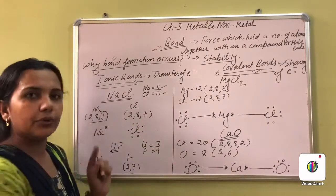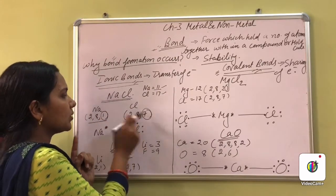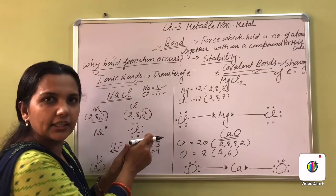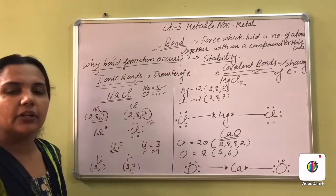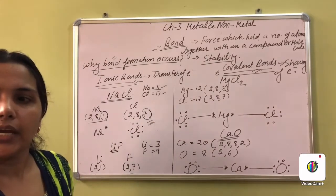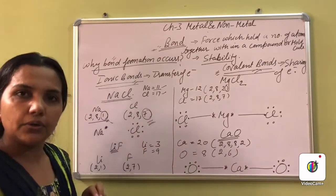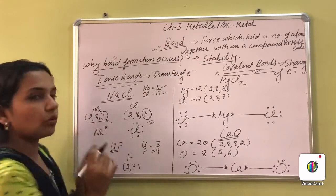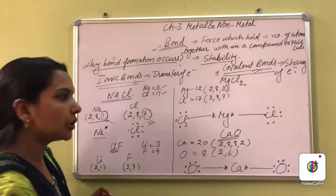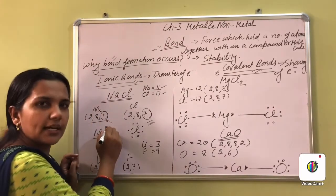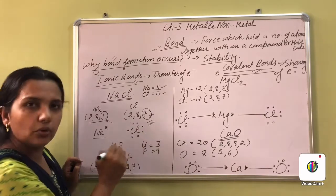So for sodium — donating one electron is easier than gaining seven. So sodium will donate that one electron to chlorine. In the electron dot structure — also called Lewis dot structure — sodium shows only the 1 outer electron, and chlorine shows its 7 outer electrons. Sodium needs 8 to complete its octet, so it donates its 1 electron to chlorine.